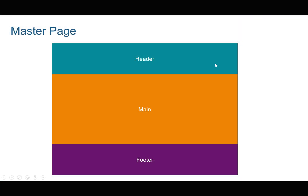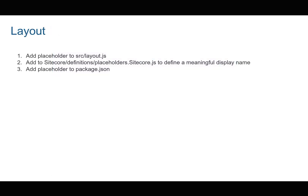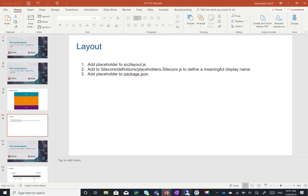What we want to achieve is to have our layout be header, main, and footer. To do so, we need to go into three different files within our JSS app: layout.js, where we'll add our placeholders; the sitecore definitions placeholders.sitecore.js, to define a meaningful display name for each placeholder; and add the placeholders to package.json. I'll explain this in more detail as we do it.